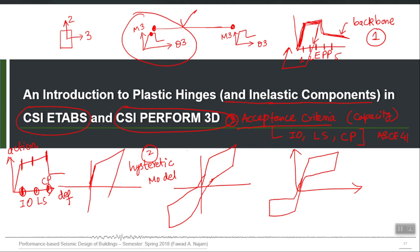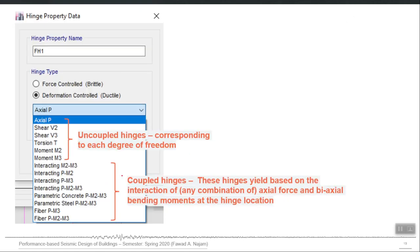There are two major types of lumped plasticity hinges in ETABS. One is uncoupled, which affects only a particular degree of freedom while the others remain elastic. The other type is coupled hinges, which affect more than one degree of freedom and are used for columns. Whenever one action affects another — like axial load affecting moment — we use coupled hinges. If the action is not affected by any other action, like flexural action in a beam assumed independent of axial load, we use an uncoupled hinge.